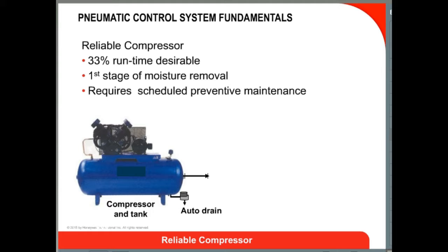A good source of supply air begins with a reliable compressor. The compressor is ideally a belt drive, oil bath type, because they run cooler, thus produce minimal oil blow-by, are durable, have good longevity, and are highly reliable. The tank will provide a large volume of air and will condense a lot of water out of the air — this is a good thing, as it is the first stage of dehumidification of the air supply.